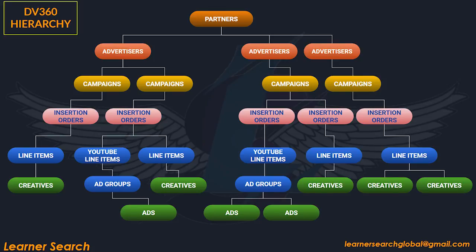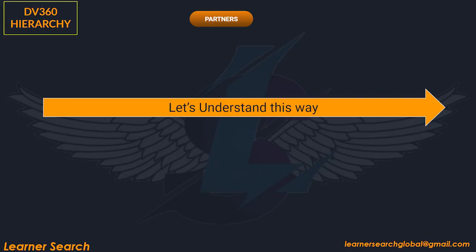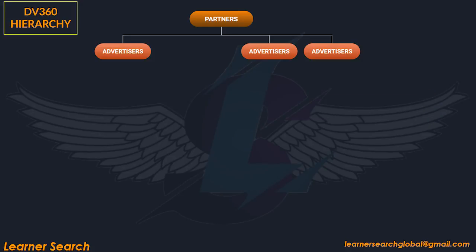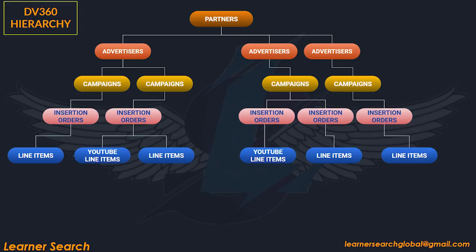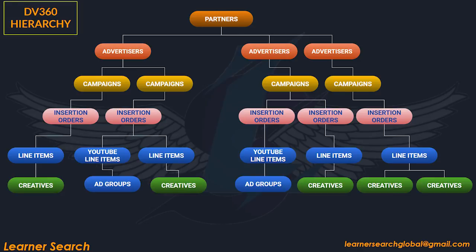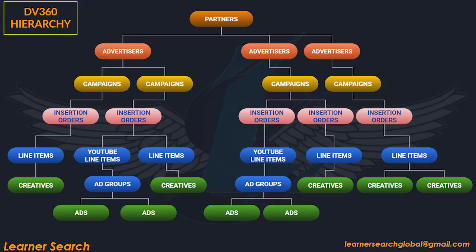Under the same partner, a new advertiser is created having one campaign, one IO, one line item, and two creatives in rotation. To summarize: one partner and three advertisers. Under partners, multiple advertisers can be created. Each IO holds single or multiple line items. Each line item is assigned with a creative. For YouTube line items, ad groups can be created, and each ad group is assigned with YouTube ads. Here is a sample preview of all the campaigns created in DV360.